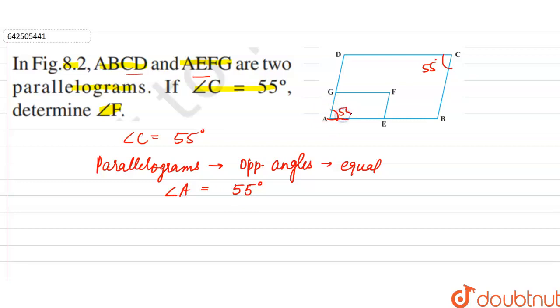Angle A is also equal to 55 degrees as angle A and angle C of parallelogram ABCD are opposite angles. Now, similarly, AEFG is a parallelogram. If angle A is equal to 55, angle F is also equal to 55.